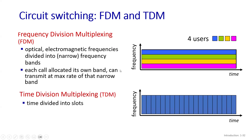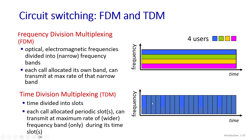In time division multiplexing, the channel is divided into time slots. Each user gets a time slot periodically, but can transmit at the maximum transmission rate during that slot. For example, user one (the blue user) uses the whole capacity, but only for the fraction of time highlighted. Once his time slot is over, he can no longer transmit. If the next three users are not sending data, those three slots go wasted, and then the blue user gets his next time slot.